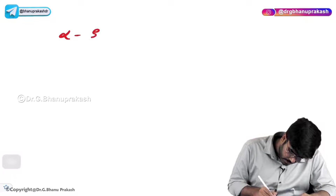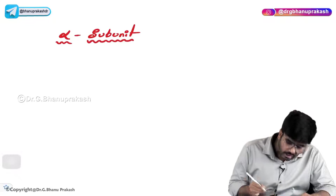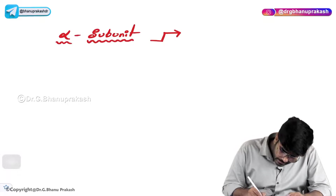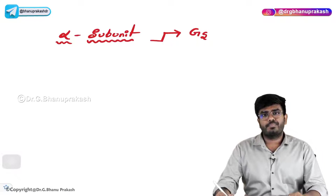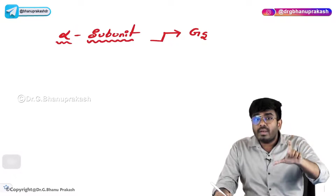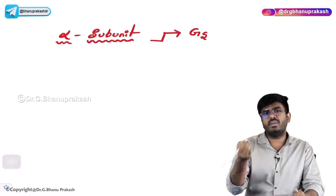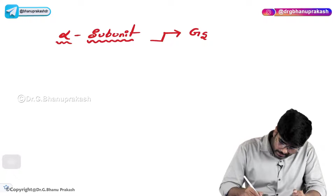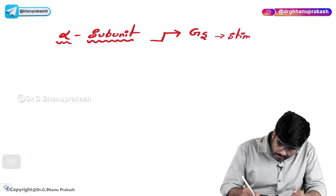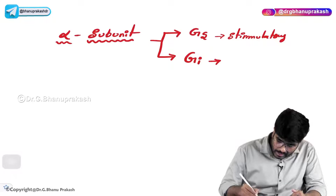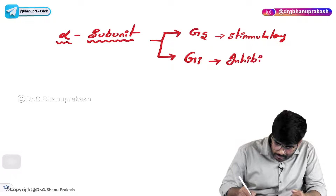Alpha subunits are of different types. For example, there is the stimulatory alpha subunit — Gs, where S stands for stimulatory. There is also Gi — I for inhibitory. And one more type is GQ. And another type is GT — T for transducin.